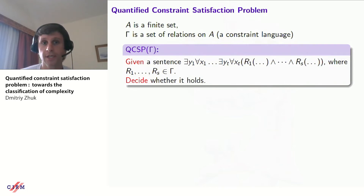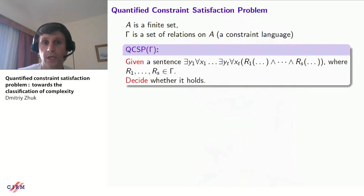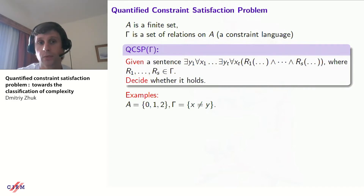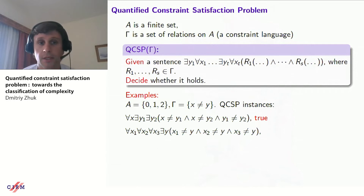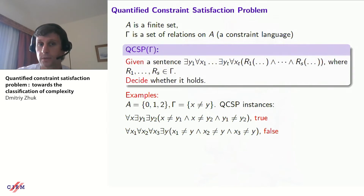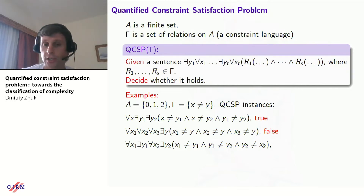For every constraint language gamma, I define a decision problem — QCSP over gamma — as follows. Given a sentence with a conjunction of relations from gamma, using both universal and existential quantifiers, we need to check whether this sentence holds, whether it's true or false. For example, on a three-element domain with just one predicate — inequality — we may consider the sentence: for every X, there exist Y1 and Y2 such that all of them are different. It's not hard to see that on a three-element domain this is true. But mixing quantifiers makes it much harder to determine truth.